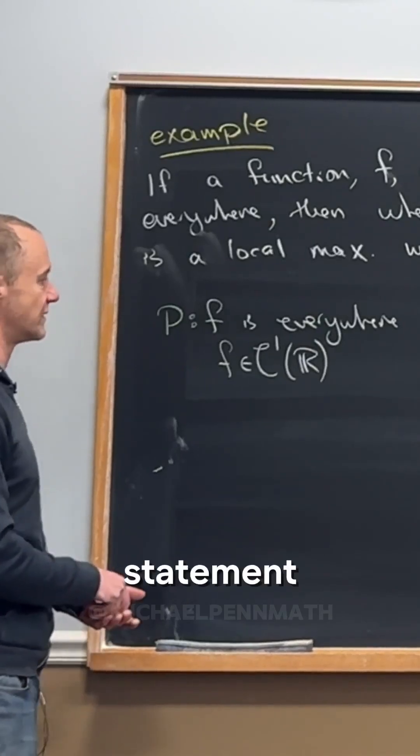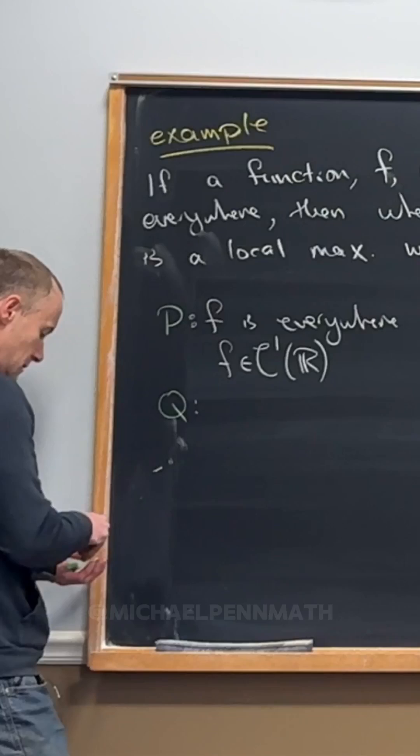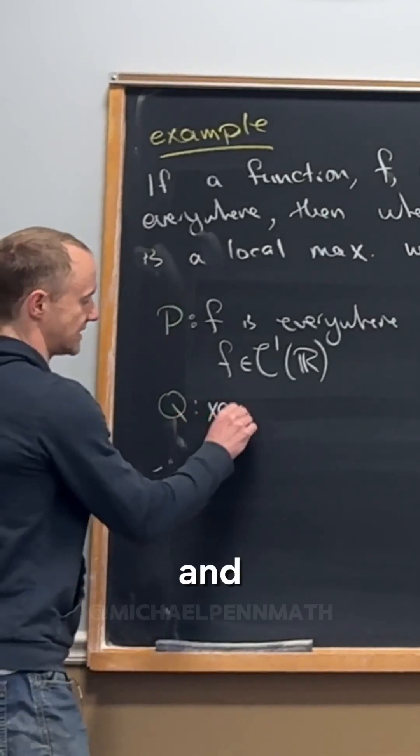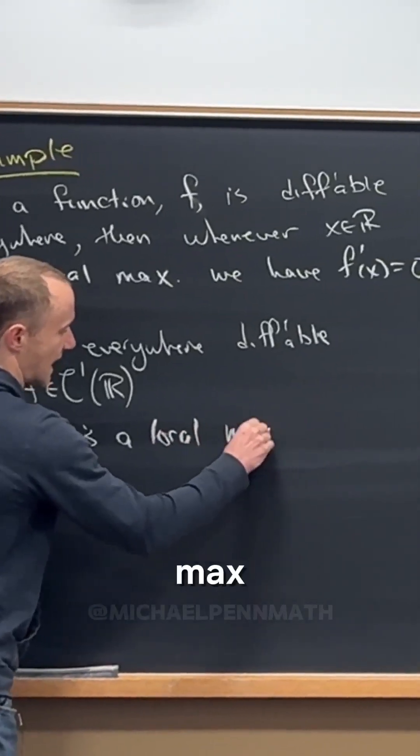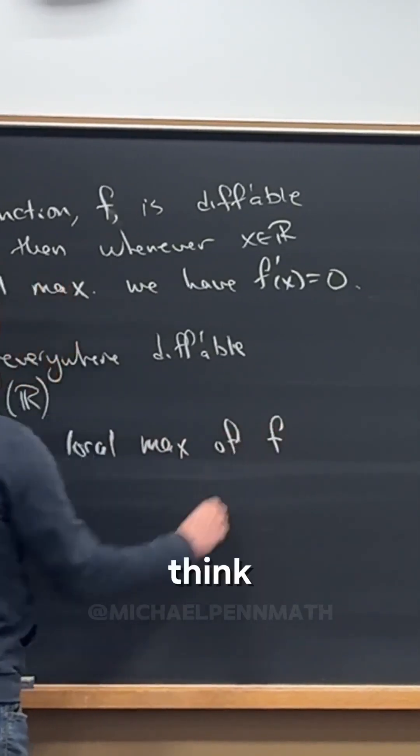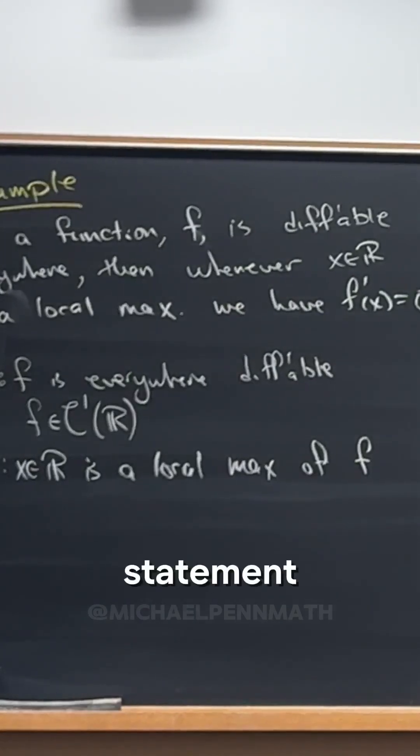Okay, then what would be another statement? Okay, so x in R is a local max of F. I think it's kind of understood - local max of F in the original statement.